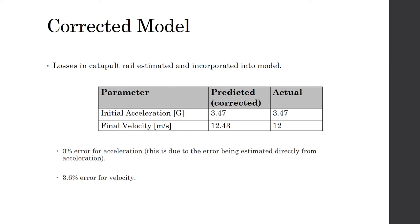The losses in the catapult rail were estimated and incorporated into the mathematical model in an effort to correct it. The losses were estimated by taking the difference between the predicted accelerations from the original model and the actual accelerations obtained experimentally.